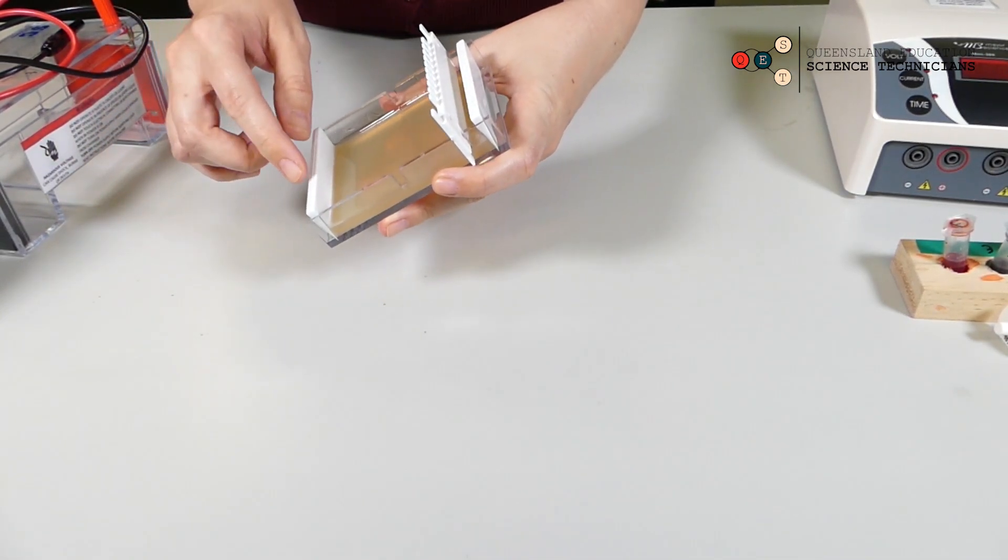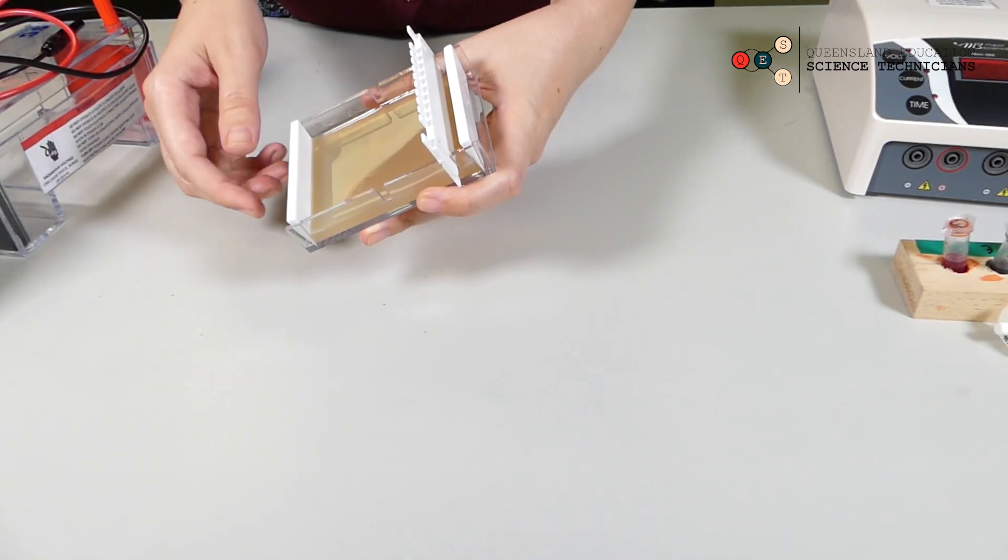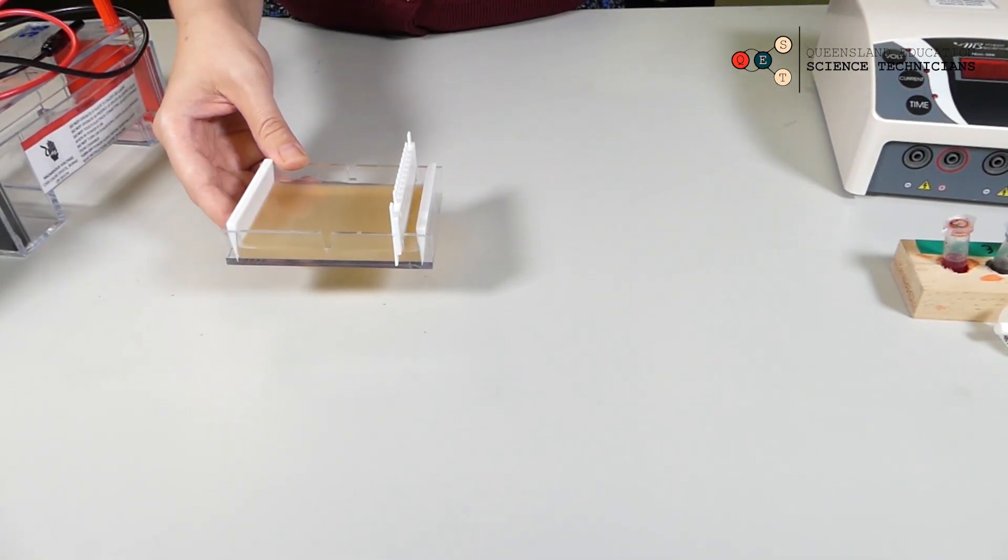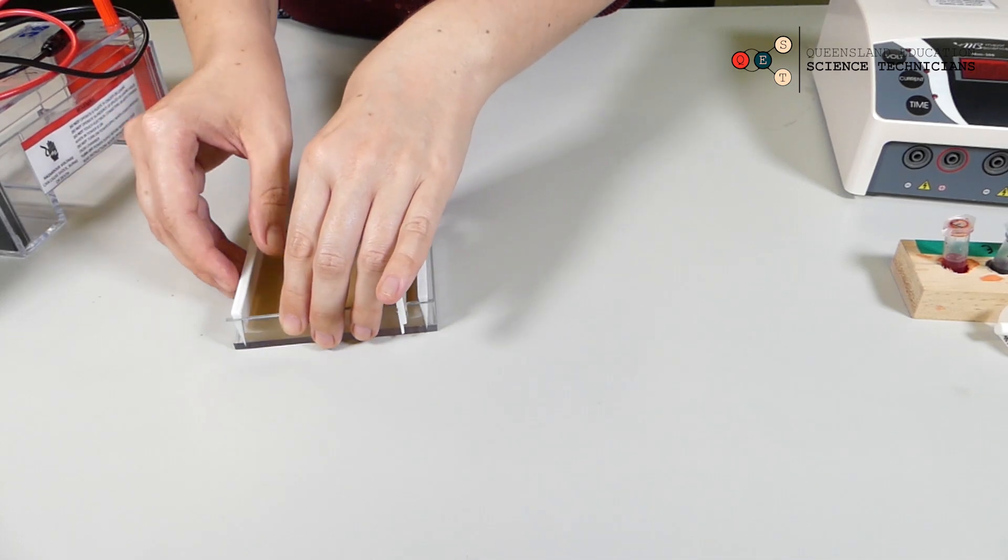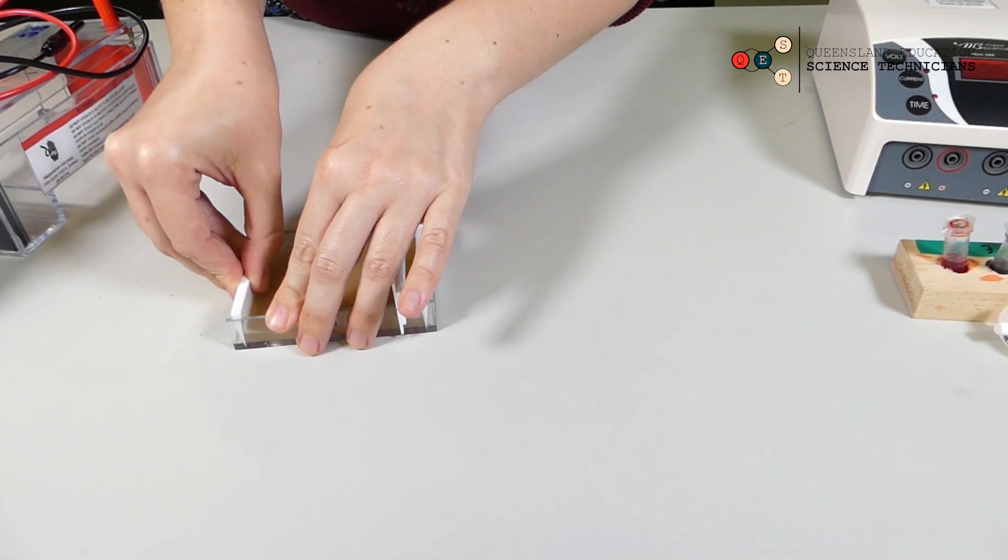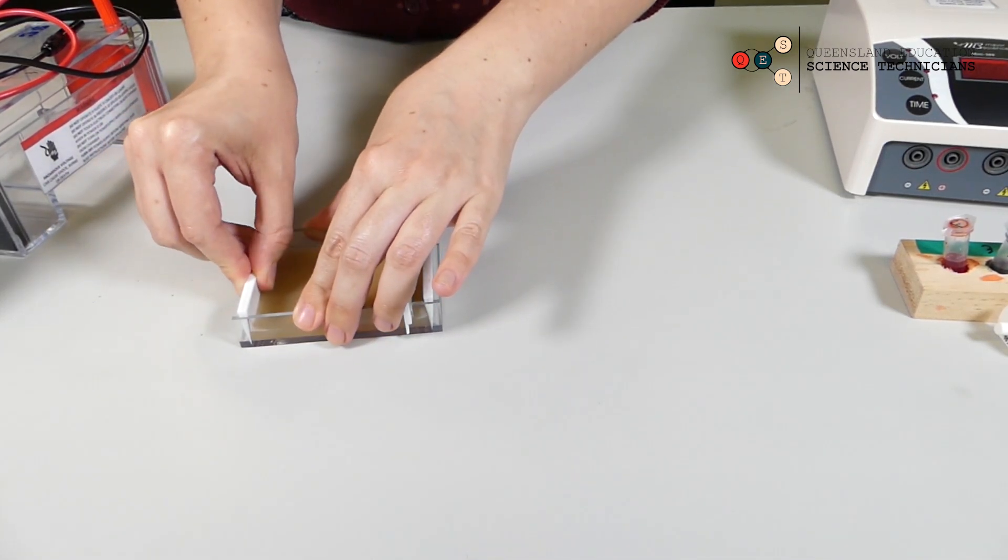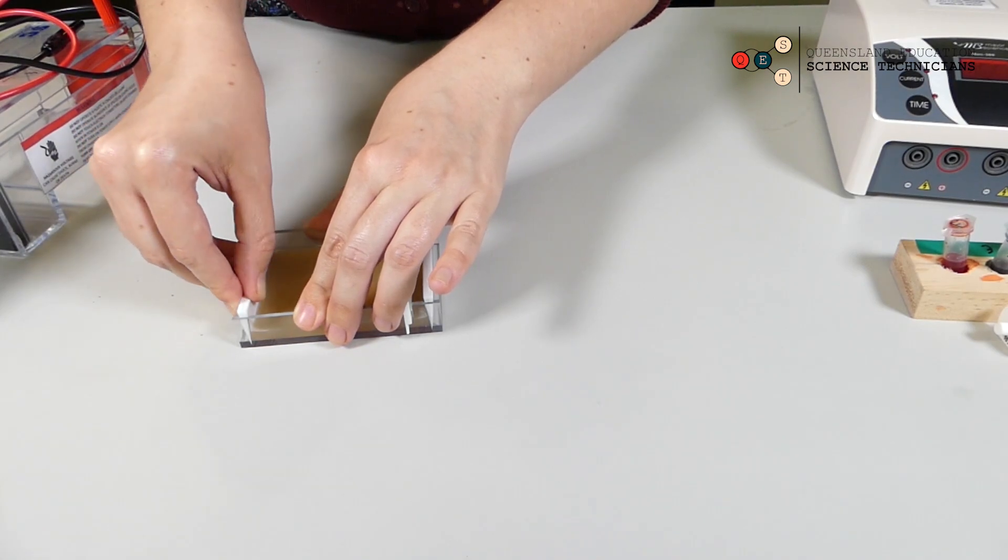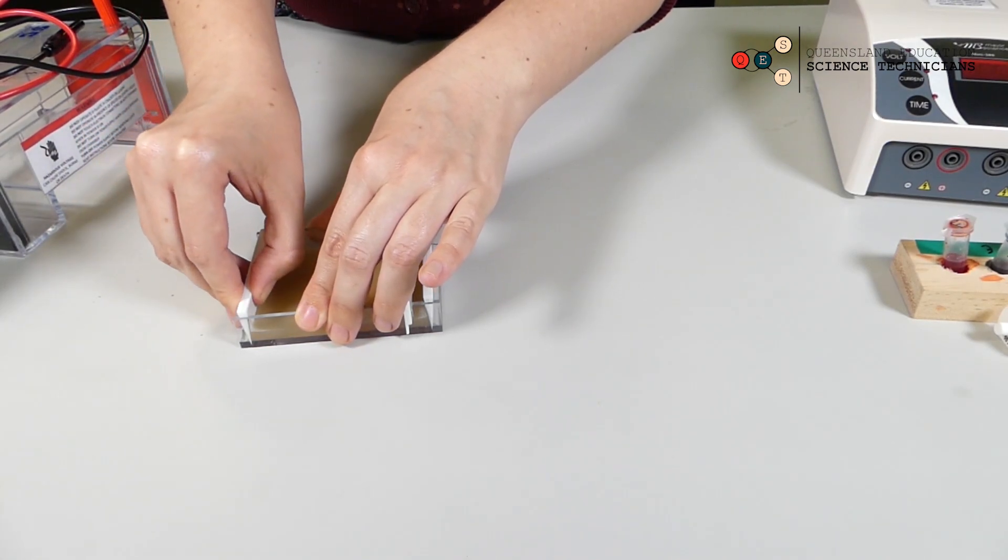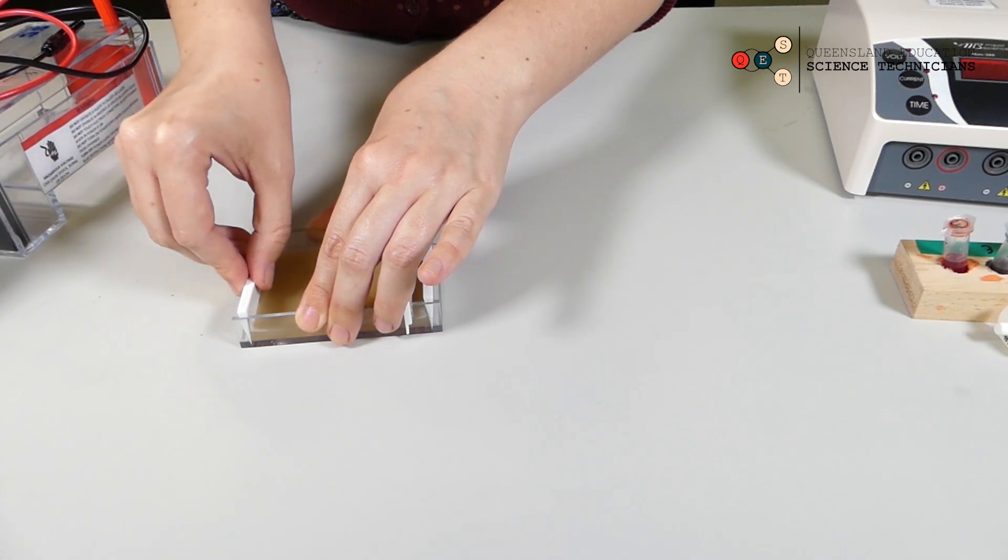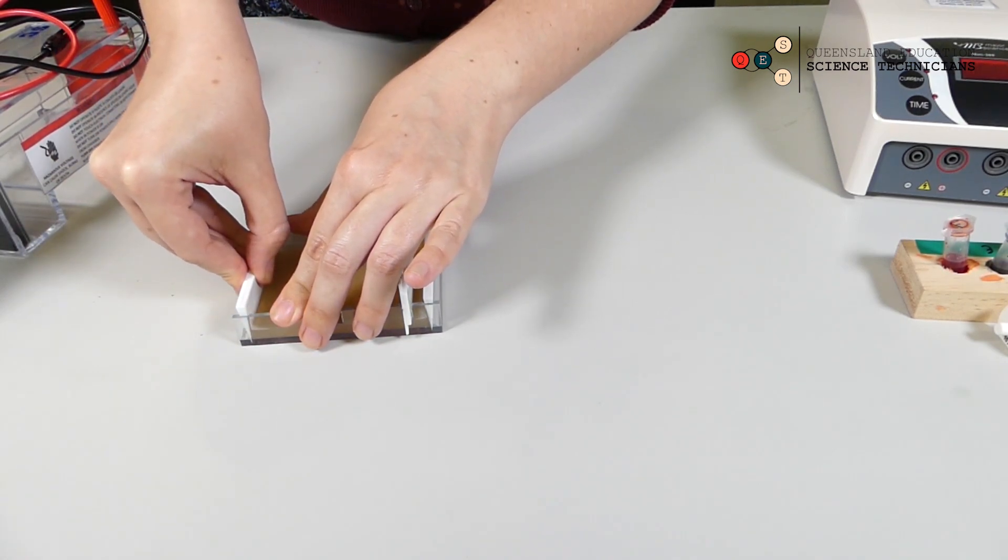We need to take out the two ends and the comb so that all that's left in this is gel. Just give it a little wiggle. You don't want to break the agar. You don't want to break that seal between the end and the agar, and then just pull it up gently.